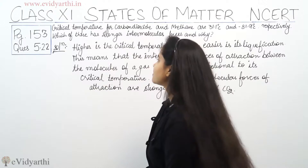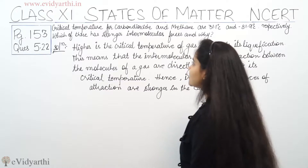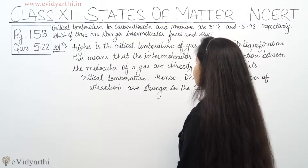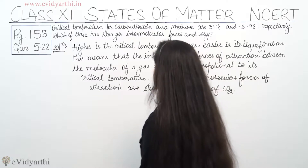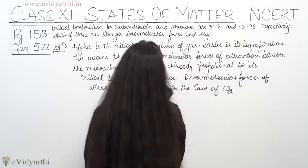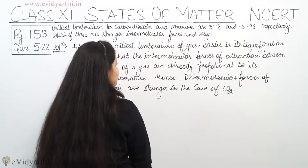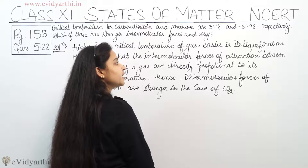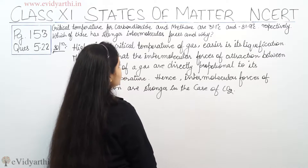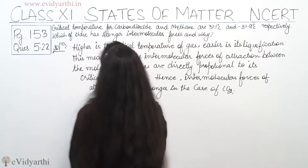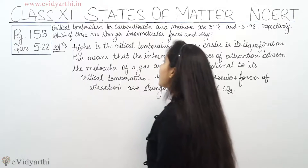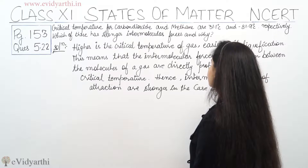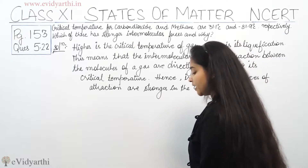So what is the question? The question is: critical temperature for carbon dioxide and methane are 31.1 degree Celsius and minus 81.9 degree Celsius respectively. Which of these has stronger intermolecular forces and why?